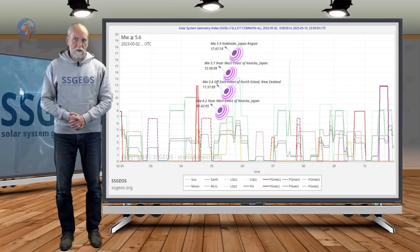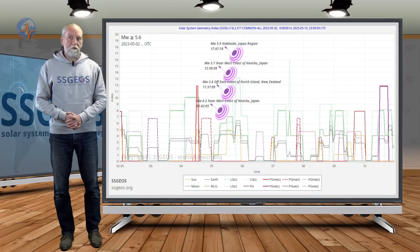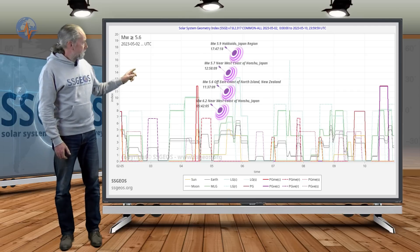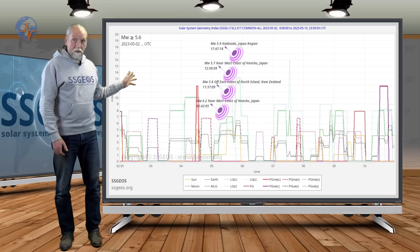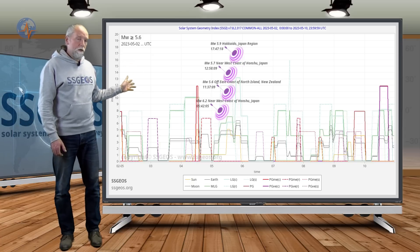Welcome to a new planetary and seismic update. We had some stronger seismic activity on the fifth, as you can see on the SEGI graph, just following the convergence of critical planetary geometry that we had on the fourth. I discussed that geometry in detail in the previous update.